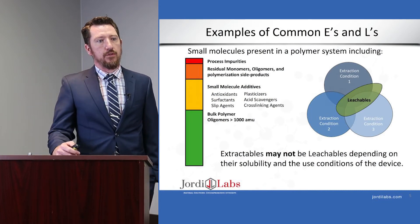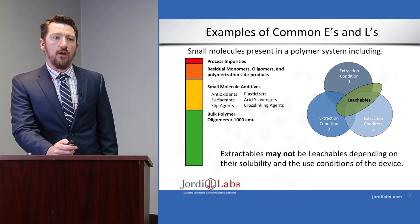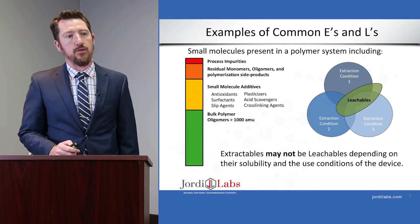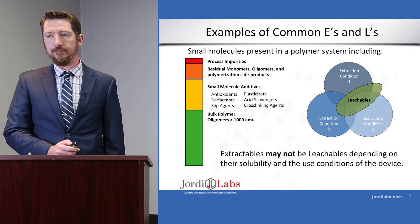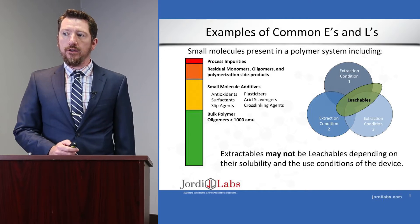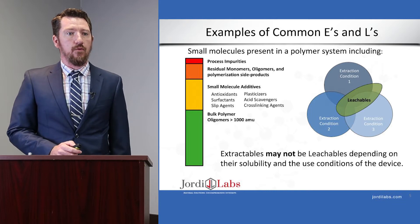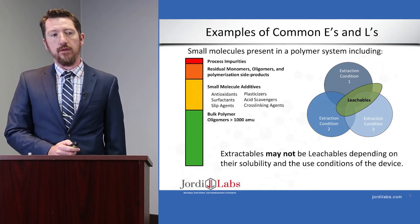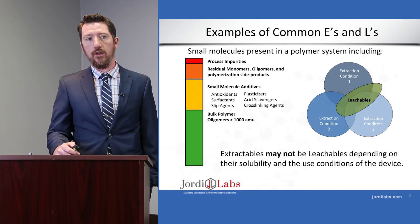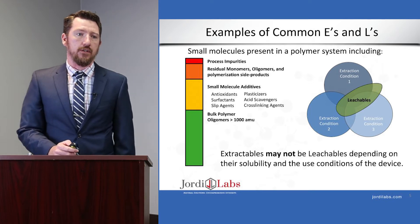Common examples of extractables and leachables include process impurities, residual monomers, small molecule additives present in polymer systems, as well as oligomers which originate from the bulk polymer. Our analysis will attempt to use a wide range of extraction conditions such that we cover a lot of ground for the potential leachables that might be in a particular system, and hopefully capture all of those leachables in one or more of those extraction conditions.